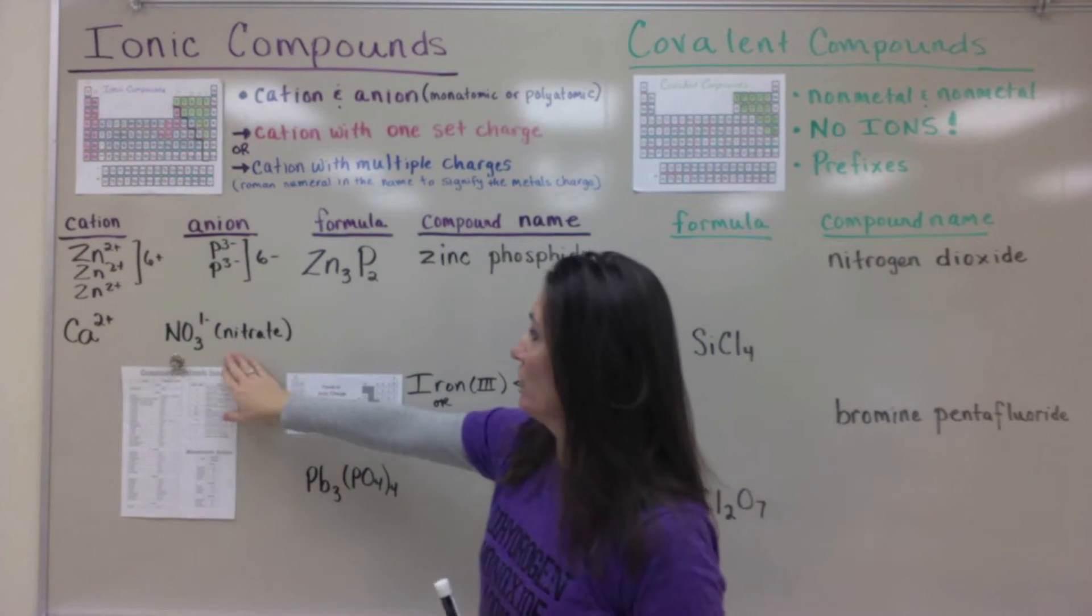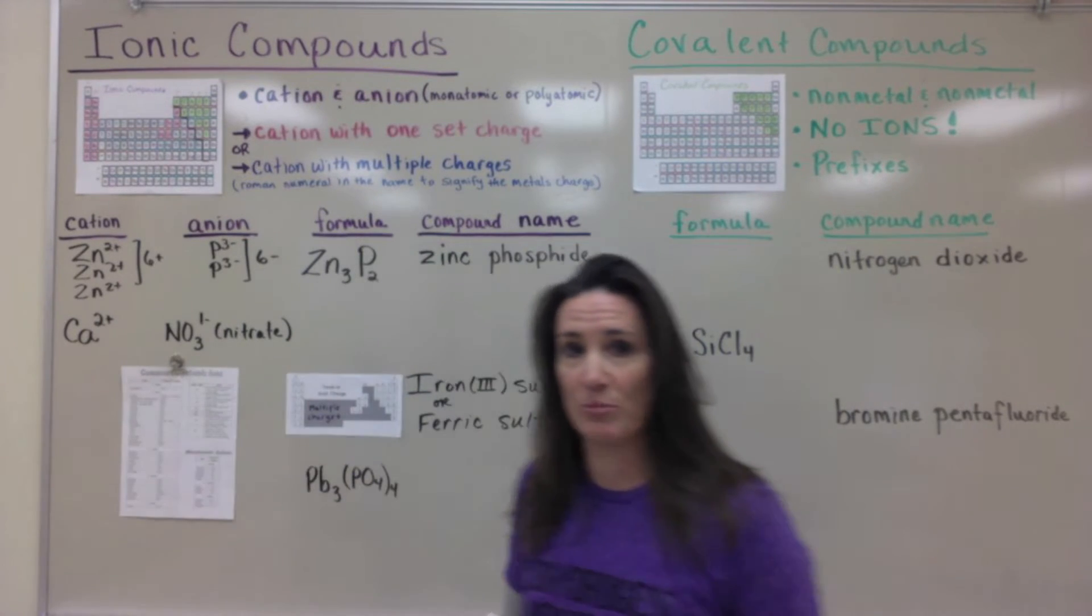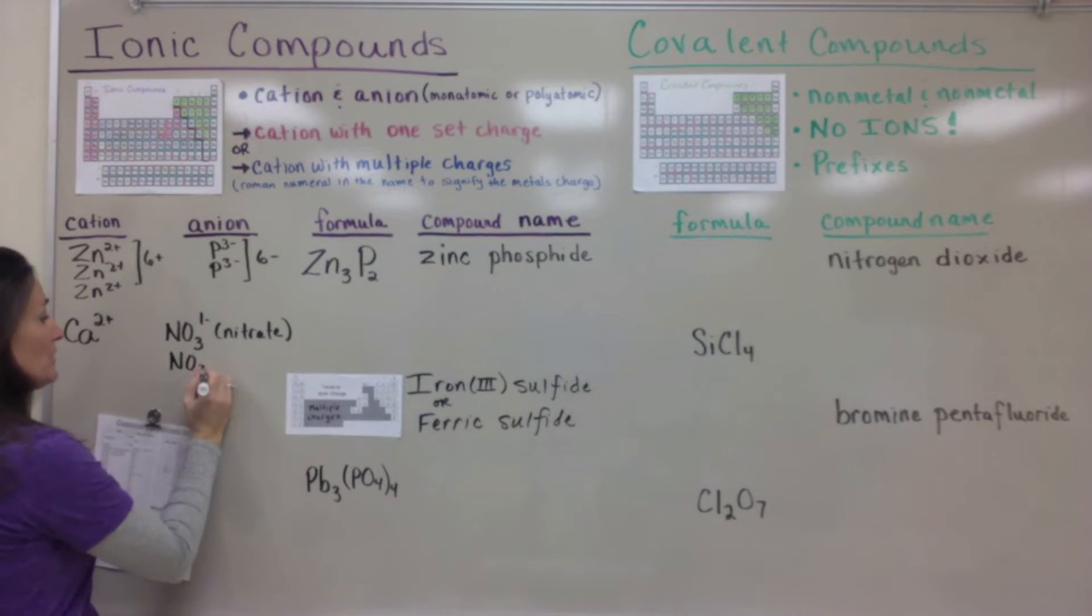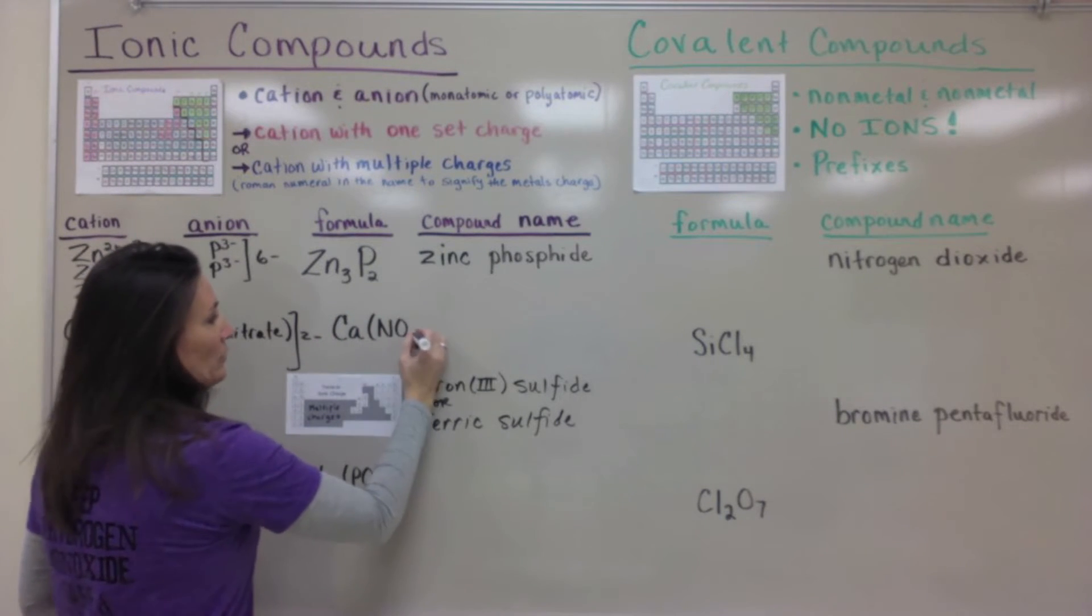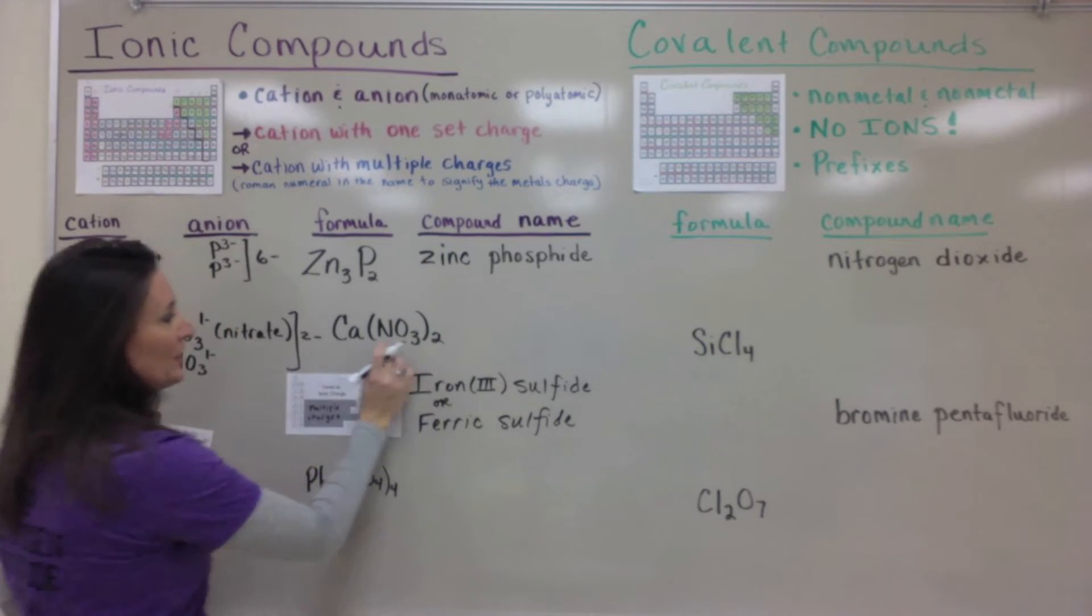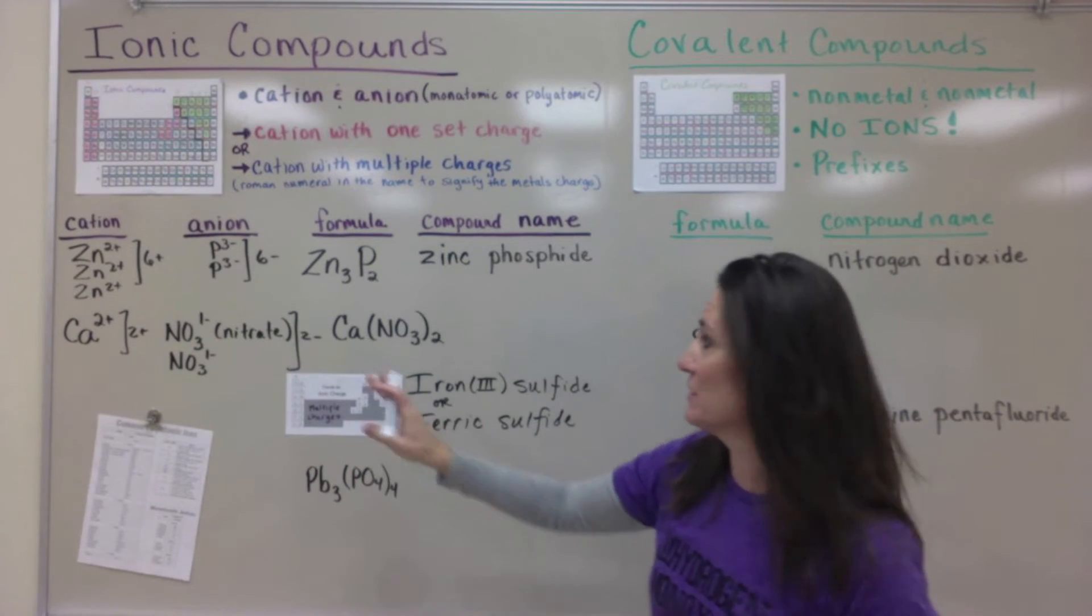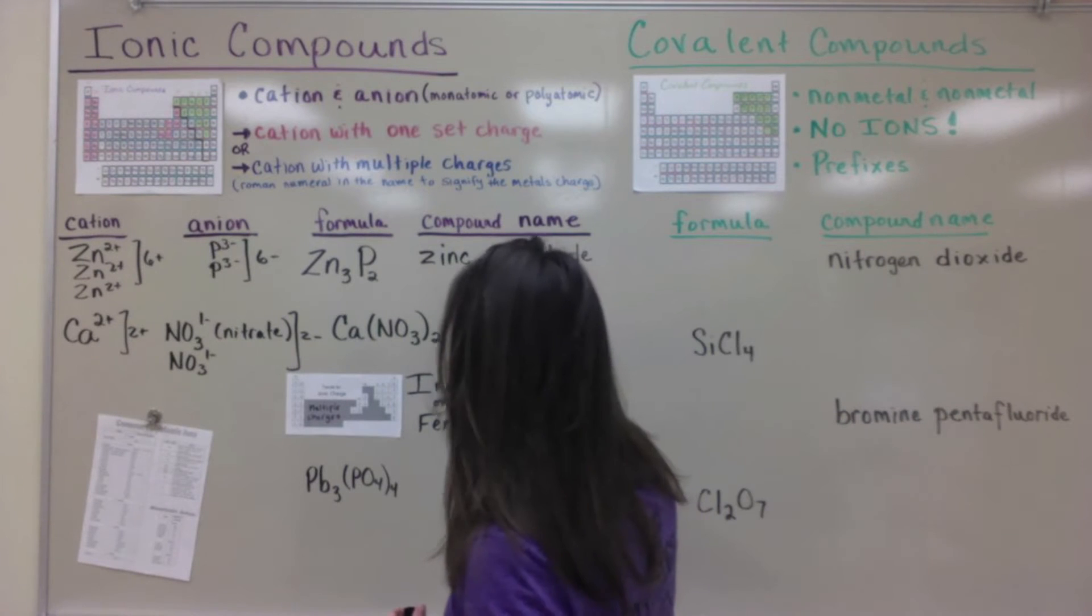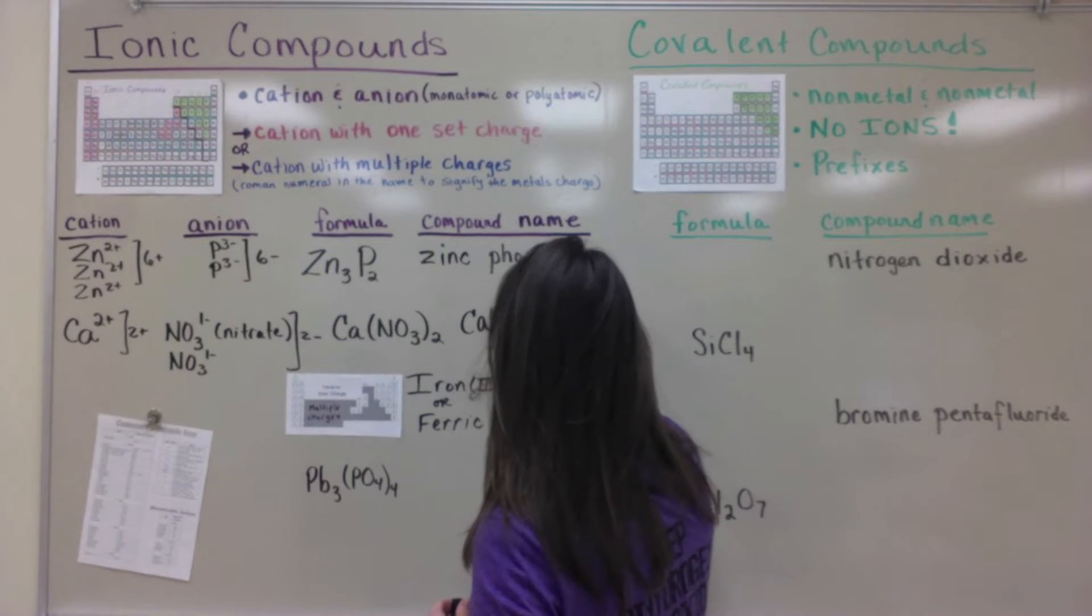The next one you need to look at your polyatomic ions list because nitrate is not on the periodic table. Calcium however is and has the predicted 2+ charge. To make this one equal zero you're going to need two nitrates and one calcium. So you have a total of 2- and 2+. And then when you write this one in formula way you have to have a parenthesis around the nitrate so that you denote that there's two nitrates. The first compound had five ions and this one has three. A calcium and two nitrate ions. When you name it you don't need any roman numerals yet because calcium can only come at a 2+ charge.